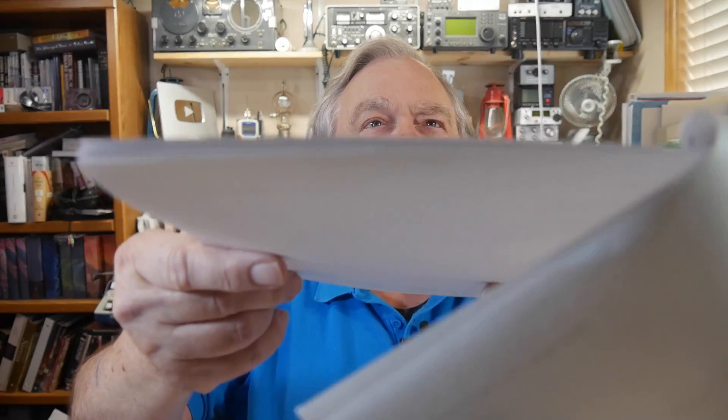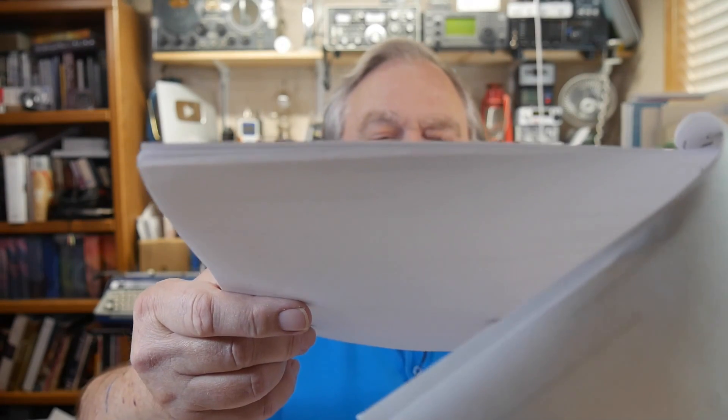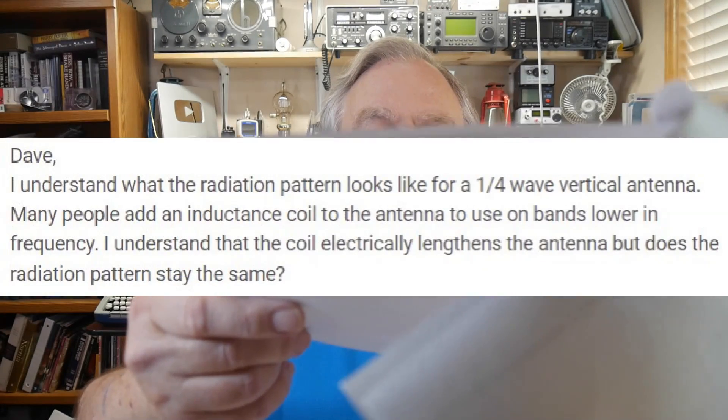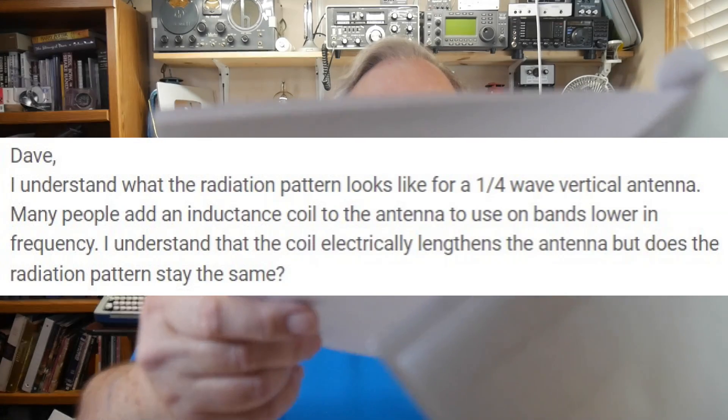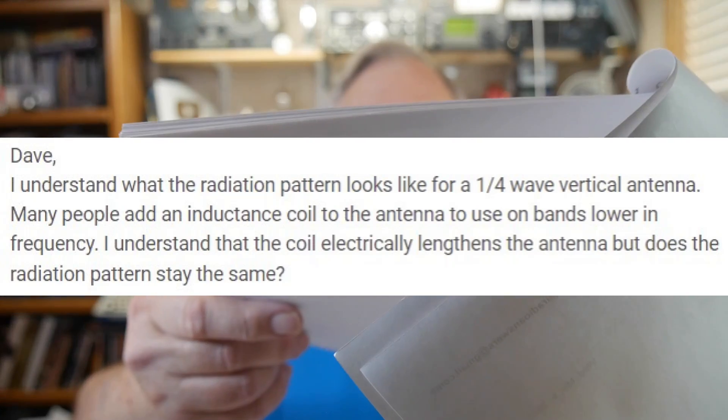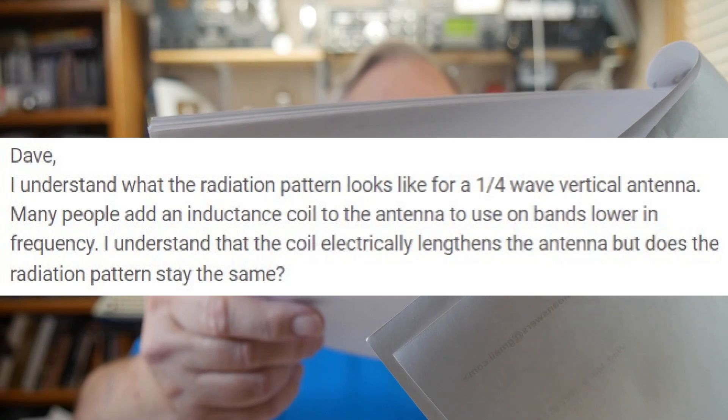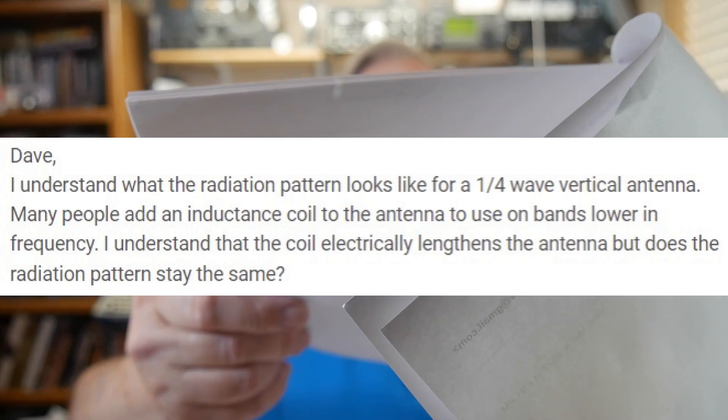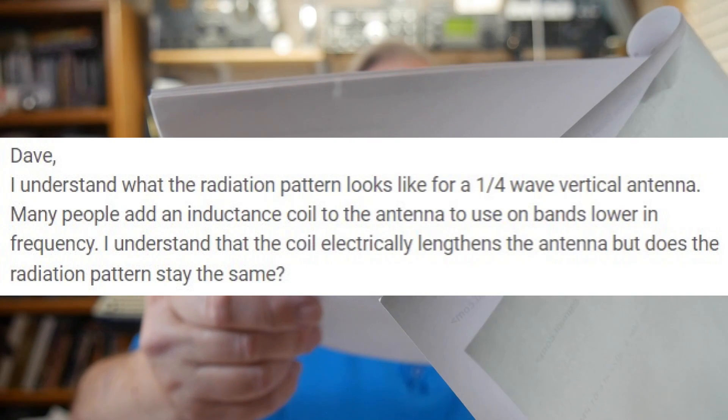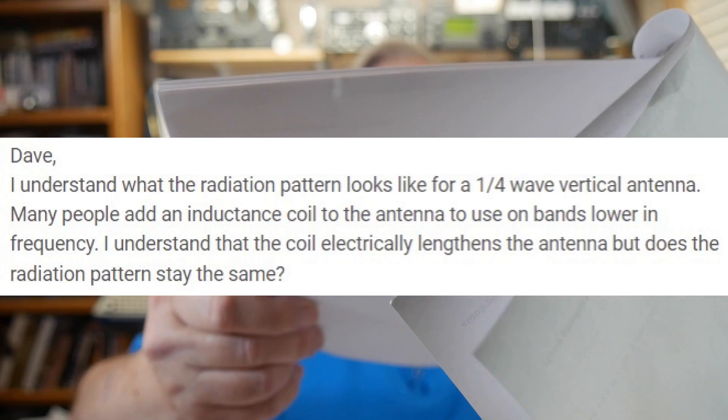Today's question comes from Steve, KN4IQE, and he asks this: I understand what the radiation pattern looks like for a quarter wave vertical antenna. Many people add an inductance coil to the antenna to use on bands lower in frequency. I understand that the coil electrically lengthens the antenna, but does the radiation pattern stay the same?